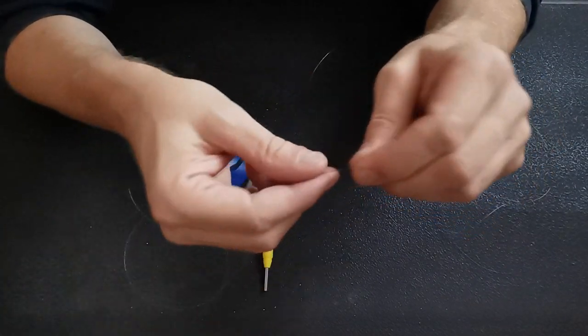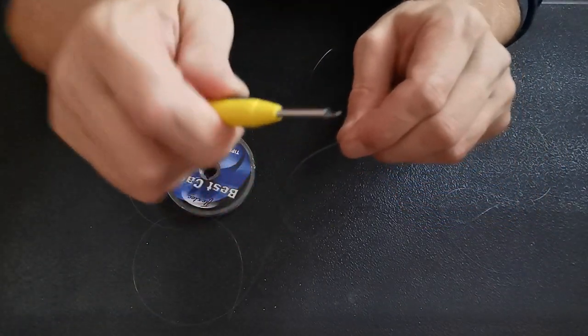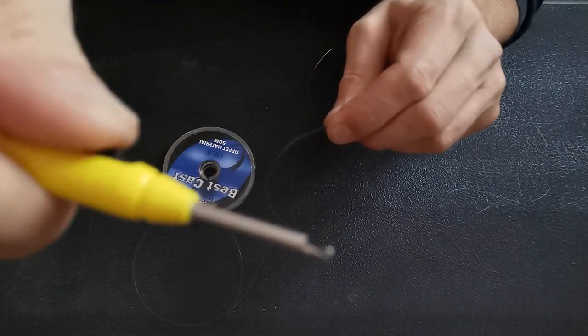So what we do first is we make a little loop. But before I do that actually, I'll just show you there's a little hook on the end there, little trigger on the side, and a little hook. That's pretty important, you see that? That's what does the trick.